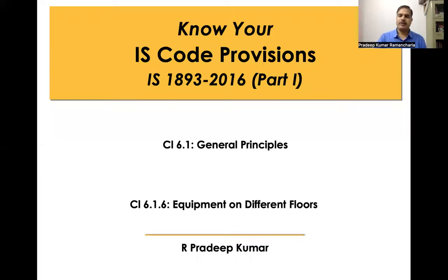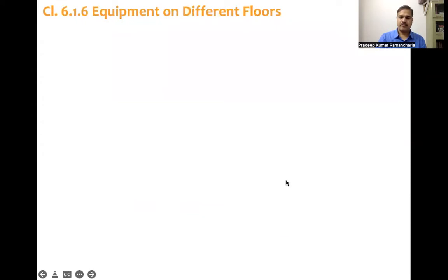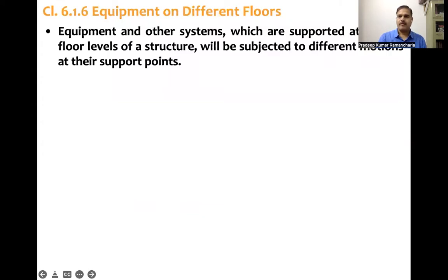Clause number 6.1.6, that is if equipment is based on different floors. What code says is equipment and other systems which are supported at various floor levels of a structure will be subjected to different motions at their support points.